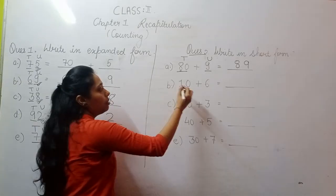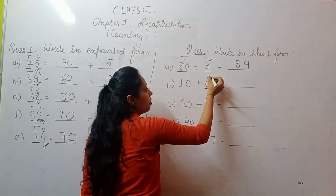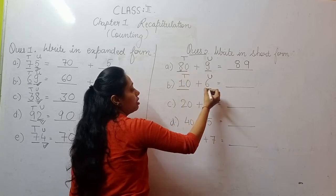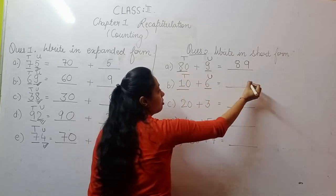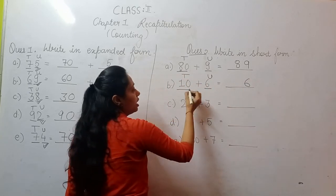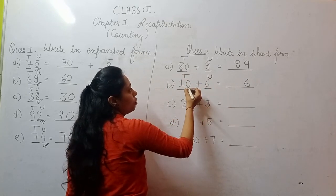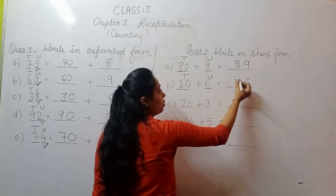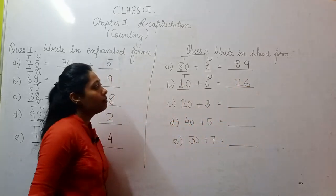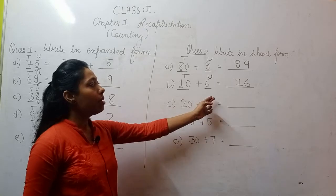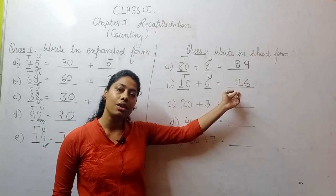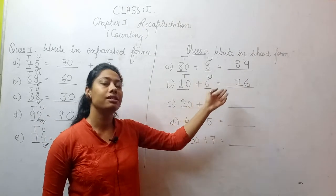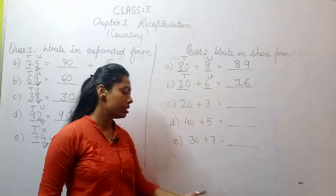In B part, this is your units place and this is your 10th place. At units place, write 6. For the 10th place, do not consider the 0 — after the 0 is written 1, so only consider 1. Therefore the number becomes 16 — 10 plus 6 is 16.